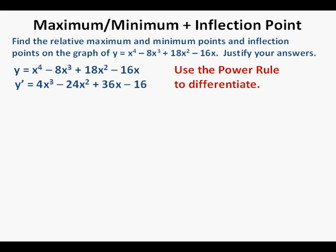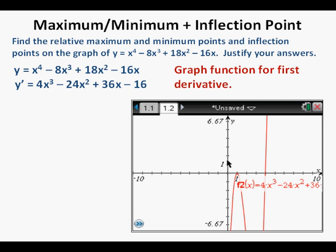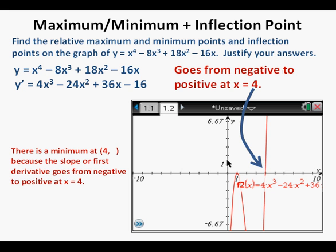Using the calculator, we enter the first derivative into the calculator. Based on the graph of the first derivative, we can answer that there is a relative minimum at 4, because the first derivative — the slope — goes from negative to positive at x equals 4. We'll find the output value for the input of 4 later when we evaluate the points.